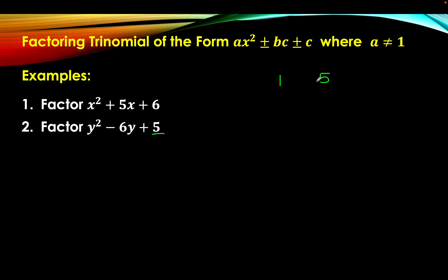Recall that when c is positive, there are two possibilities: either both numbers are positive, or both numbers are negative. That is why we need to consider the middle term. The middle term is negative 6, which means both numbers are negative. So if we add negative 1 plus negative 5, that's negative 1 minus 5, which equals negative 6. Since there is only one possible pair, this confirms our answer.